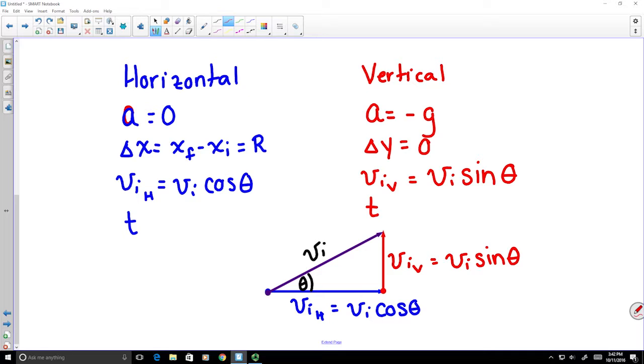So what we want to do is using the things that are common here, such as our Vi and our time, to figure out an expression for our range in terms of our launching speed and our angle theta. Our goal in the algebra will be to find a common variable such as time that is common for both the vertical and horizontal components of motion, and write down expressions for those, and then we can set those equal to each other. The next few steps will show how we use our horizontal information to find an expression for the time, and then we are going to substitute that into an expression for our vertical motion.